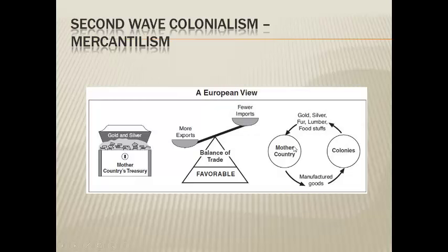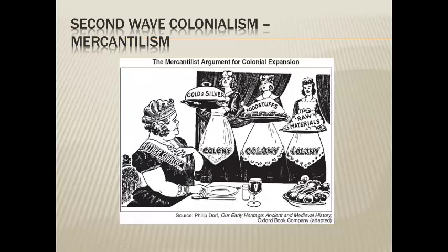It's a cycle — the idea is that everyone benefits, and the mother country benefits most. This cartoon is playing on this idea: you can see Queen Victoria being fed on a silver platter all these goods from her colonies — the gold and silver, the food, the raw materials — making the empire rich and prosperous. This cartoon clearly shows the power dynamic at play between the colony and the colonizers. The colonies are literally the servants of the queen; that's their purpose and their role — to serve the mother country and make it greater.